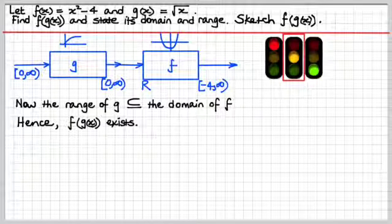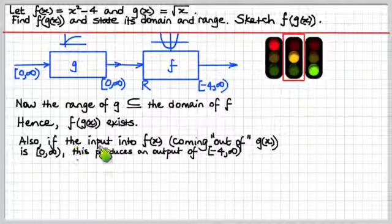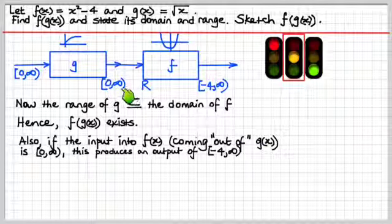Alright, so therefore, f of g of x does exist. And we can see that if the input into f of x, that is, what's coming out of g of x here, is from 0, including 0, up to infinity,